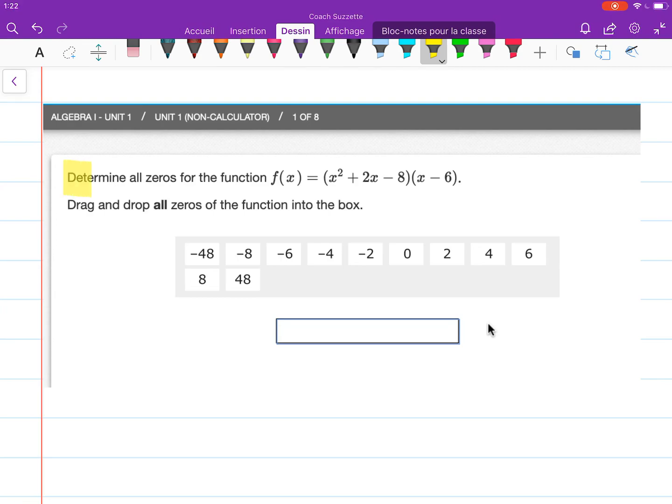We are given: determine all zeros for the function f(x) = (x² + 2x - 8)(x - 6). Drag and drop all zeros of the function into the box. Well this is a screenshot so we won't be dragging and dropping anything but we can still find the zeros.